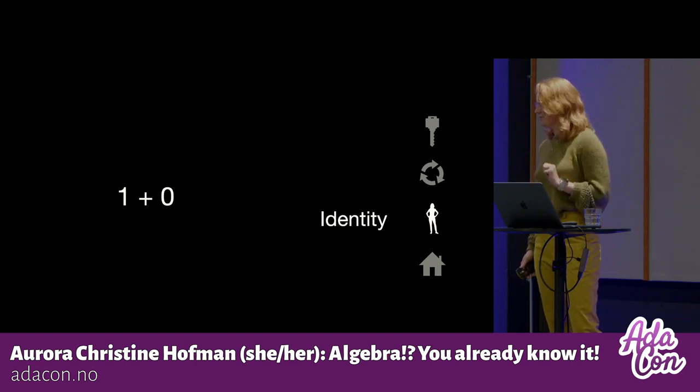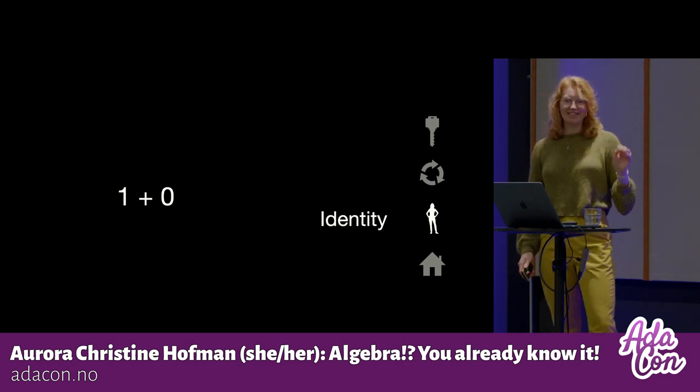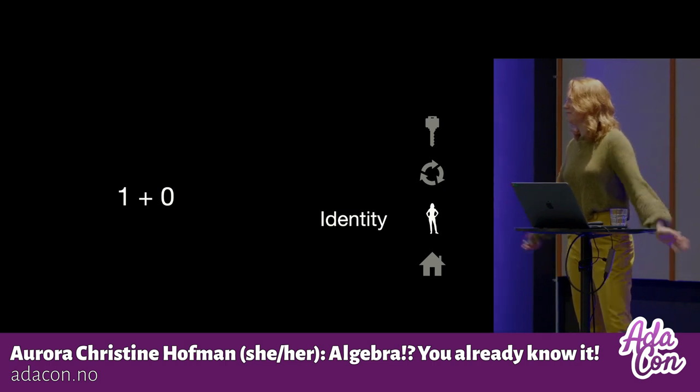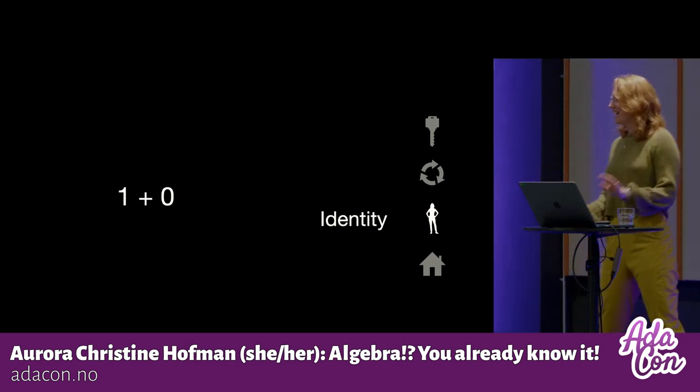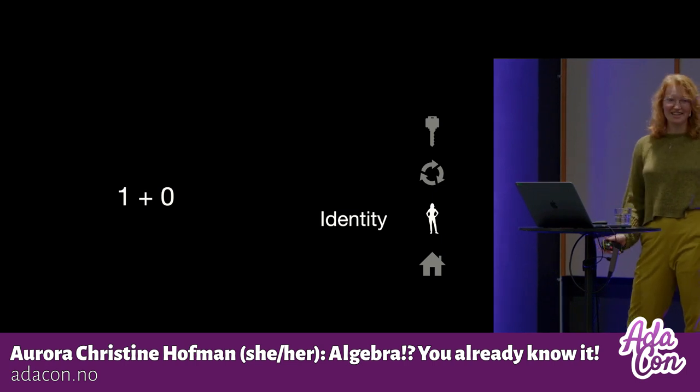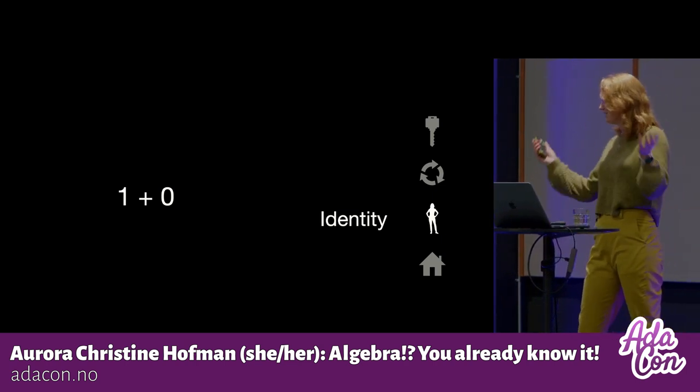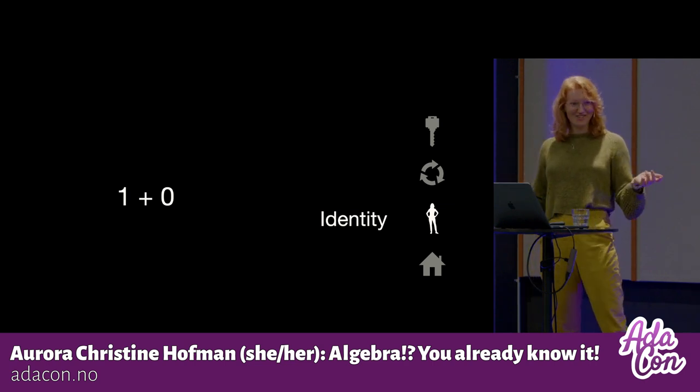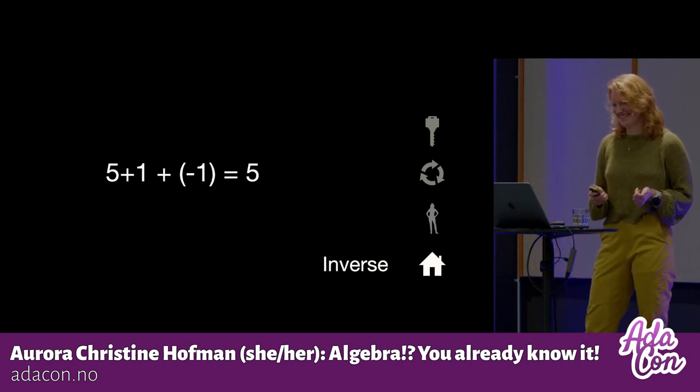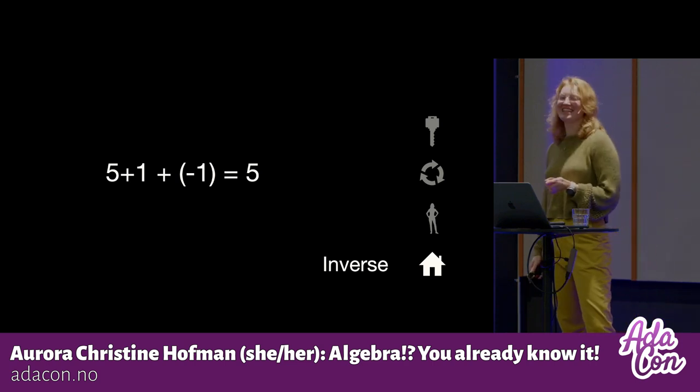Okay. Third rule, the identity element. The identity element means an element that doesn't change anything. It doesn't do anything. So with natural numbers and addition, this is zero. You can add zero to any number, and it doesn't change anything at all. Cool, right?